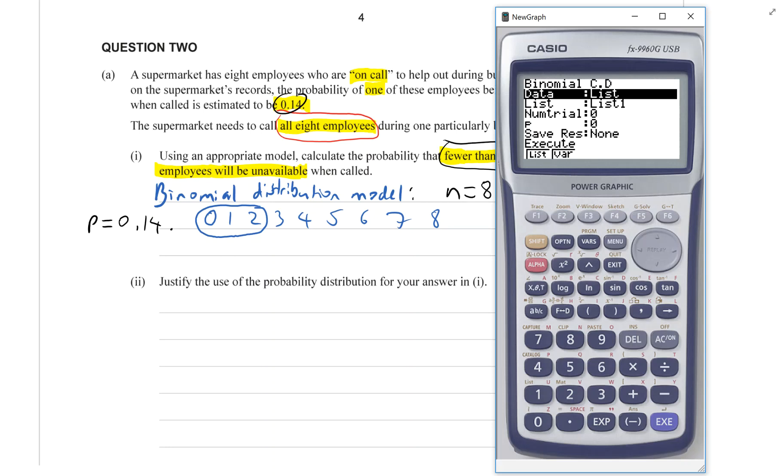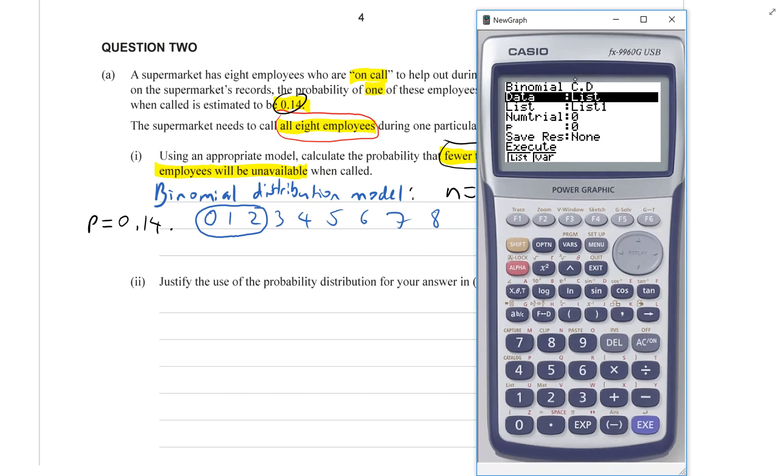Now, when you reset your calculator, as they will on the exam, it's going to come up with list. You're going to see this on the exam day. You have to change it to variable. So you hit F2, changes it to variable.